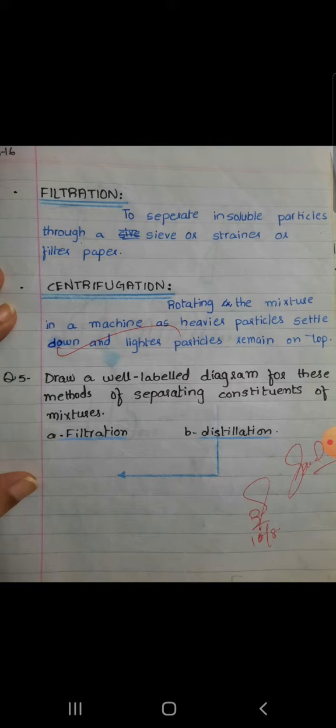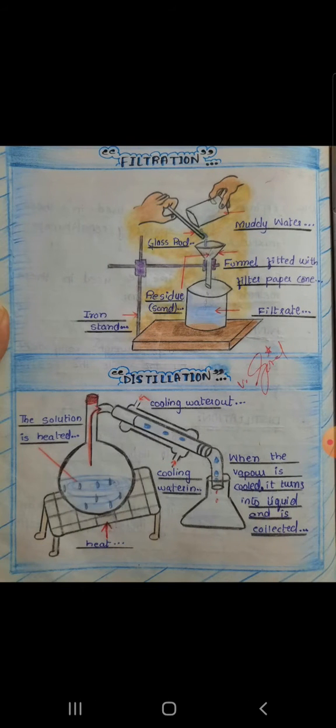number five: Draw a well-labeled diagram for these methods of separating constituents of mixture. Number one is filtration, number two is distillation. You will draw the diagrams in your copy in the plain page. Filtration diagram is given in your book and distillation diagram you will